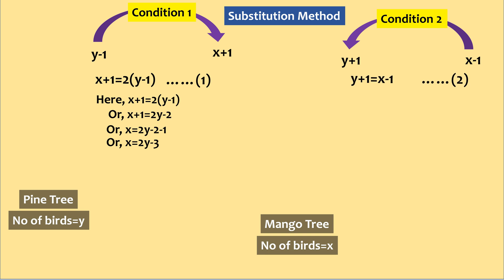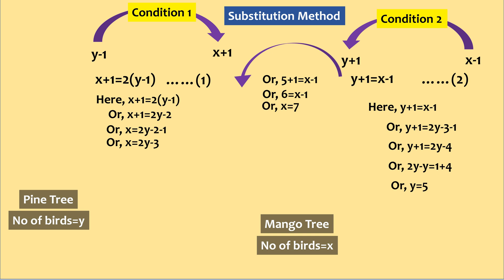Let's substitute this value to equation 2. Here y plus 1 equals to x minus 1, or y plus 1 equals to 2y minus 3 minus 1. Or y plus 1 equals to 2y minus 4, or y equals to 5. Now we replace this value of y to equation 2 to get the value of x. And we find out that x equals to 7.